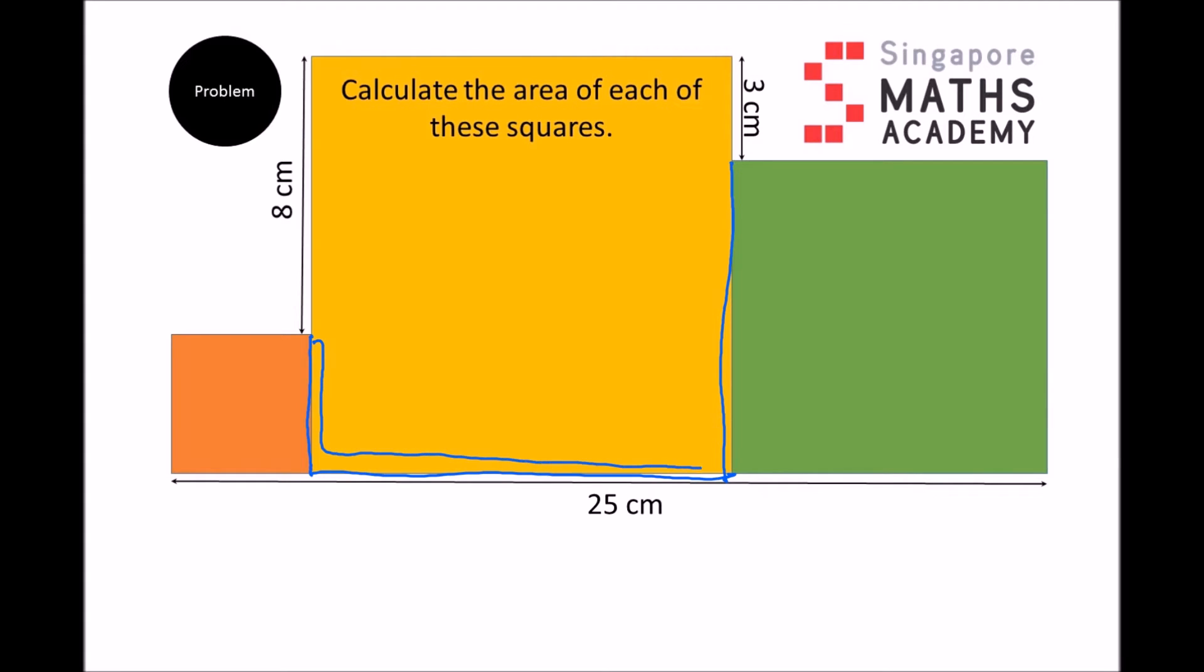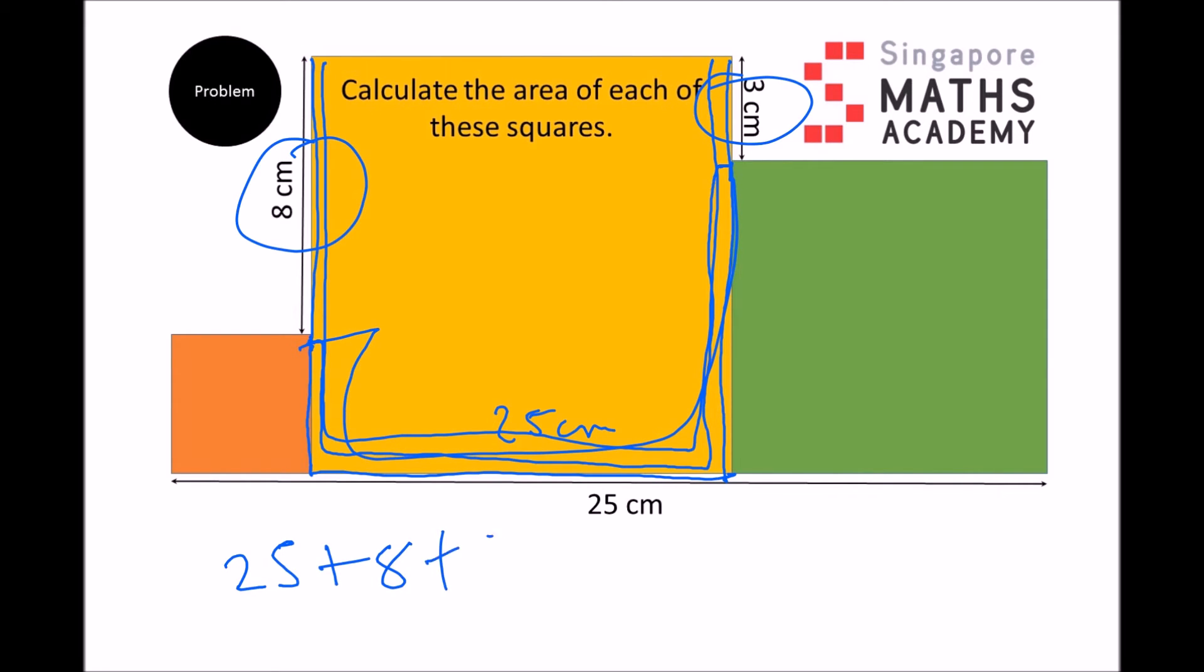So if that's all 25cm, and they've given us 8cm here and 3cm there, then therefore, all of this section here, this, this, and this, so that means 3 lengths for the large square. 3 lengths is equal to 25, which is this point, plus the 8, plus the 3, is 36cm. So those 3 lengths must be 36cm.